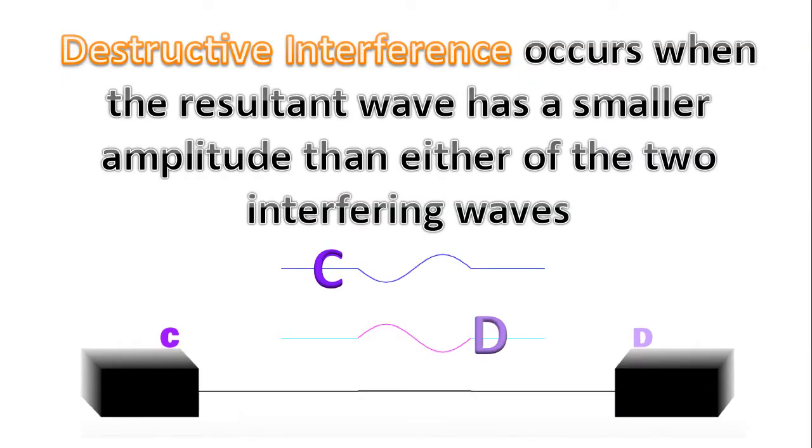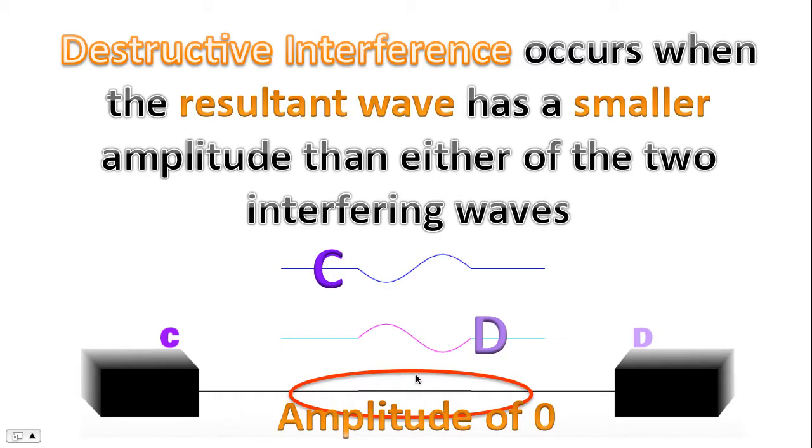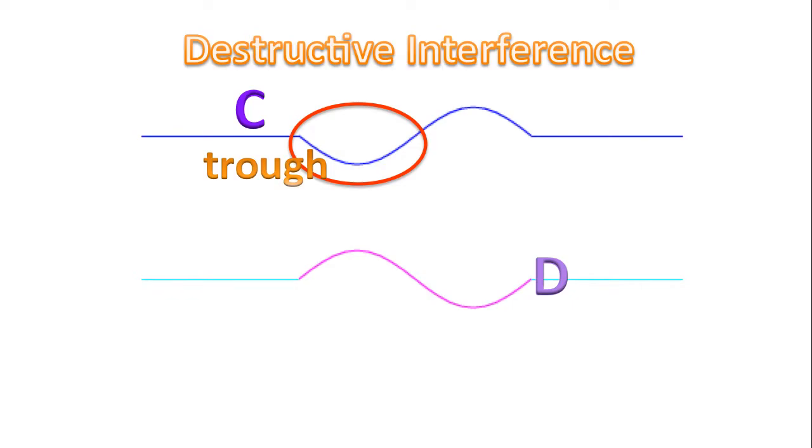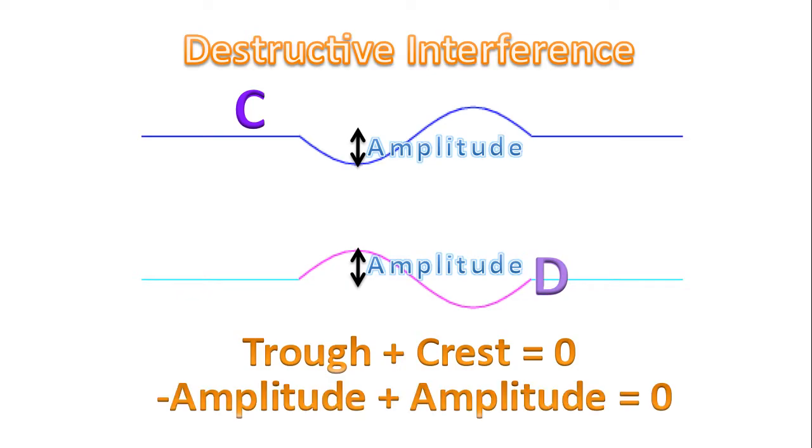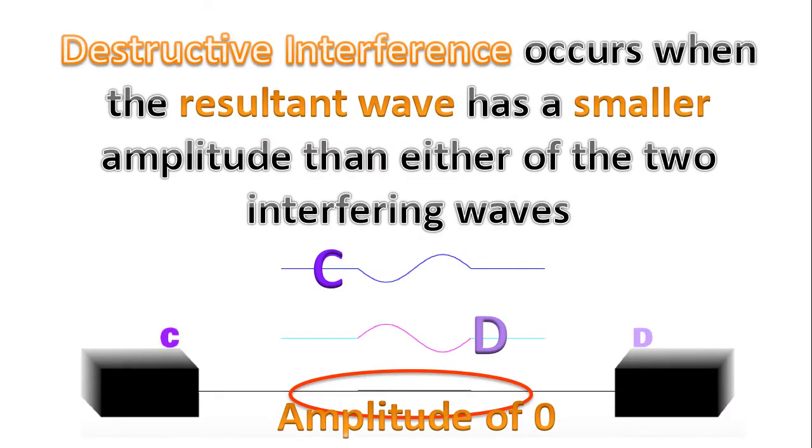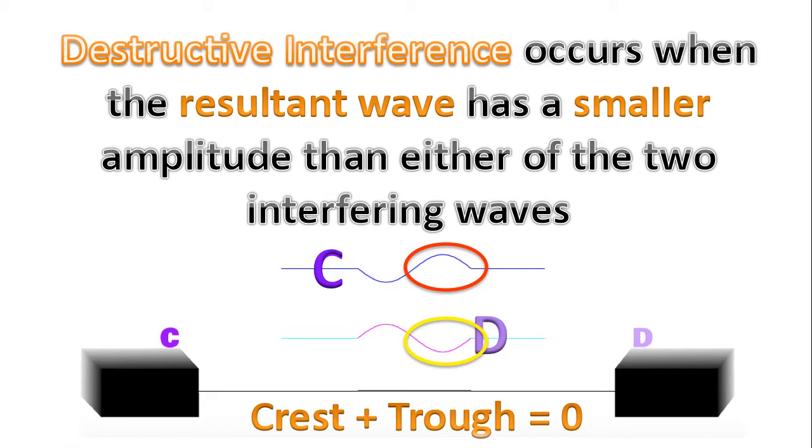So the first form of interference I specifically want to discuss is destructive interference. It occurs when the resultant wave has a smaller amplitude than either of the two interfering waves. And in this case, the resultant wave, the wave that I have circled here, has an amplitude of exactly zero. Why is that? Well, notice I've circled a trough for wave C and a crest for wave D. Notice that the amplitudes of the two waves are the same. So when you add a trough and a crest and they have the same amplitude, the result is zero. You're adding a negative with a positive. The result is zero. And that's what we see here. The trough cancels out with the crest, and the crest cancels out with the trough when the amplitudes are the same.